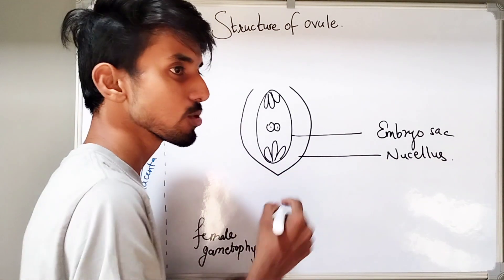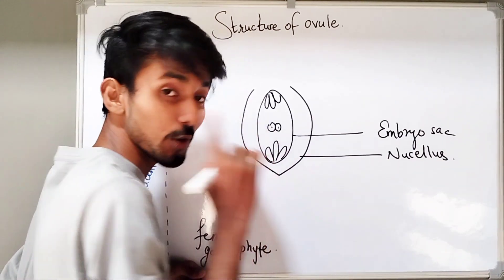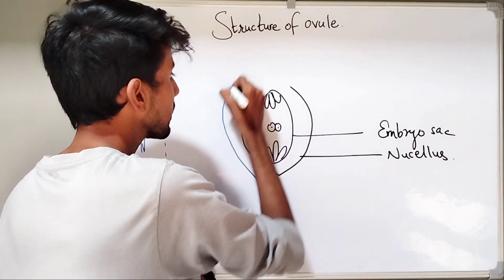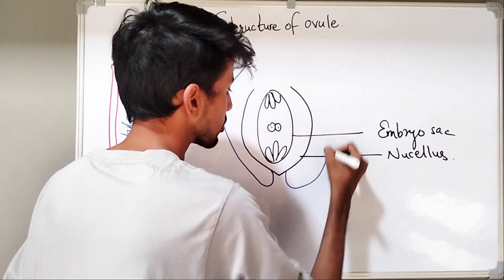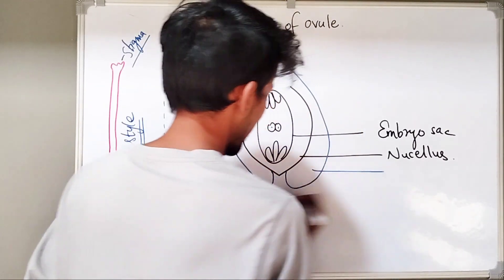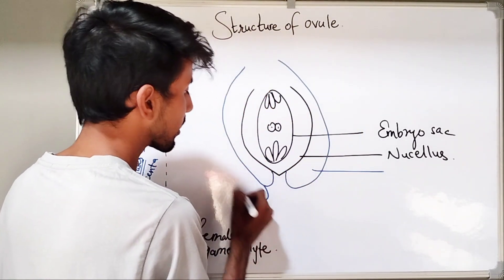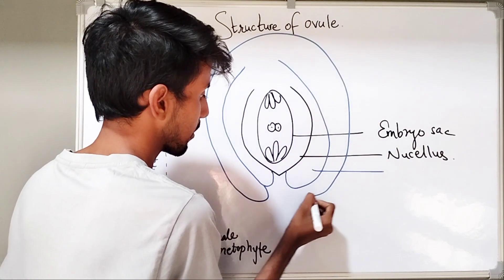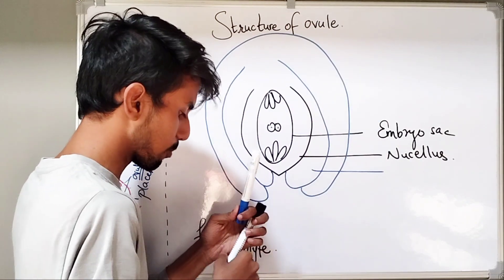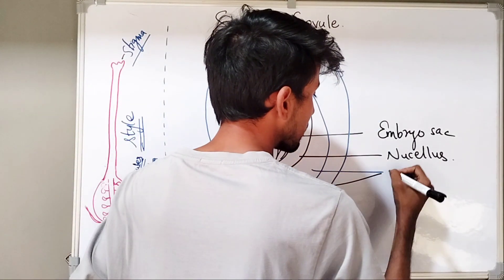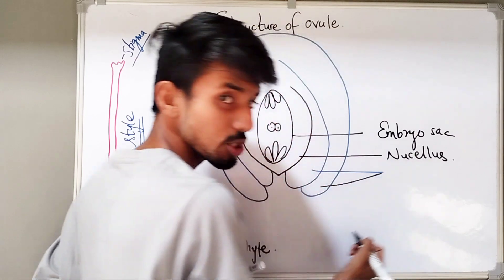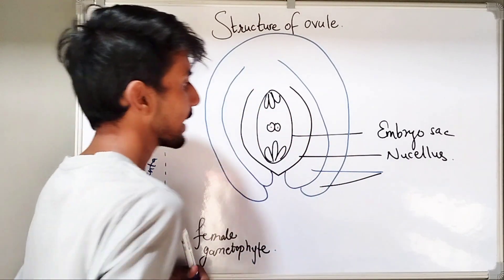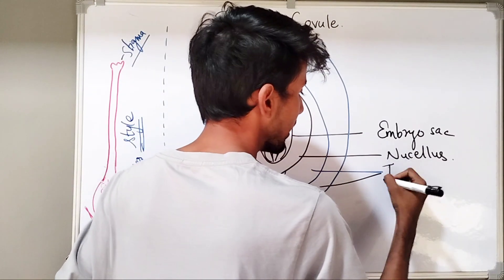Surrounding the nucellus, we have two protective membranes. Firstly, the inner integument. And outside the inner integument, we have the outer integument. These two integuments are protective in function — they provide protection to the nucellus and the inner-lined embryo sac. These are called as integuments. You can call this one as inner and this one as outer.